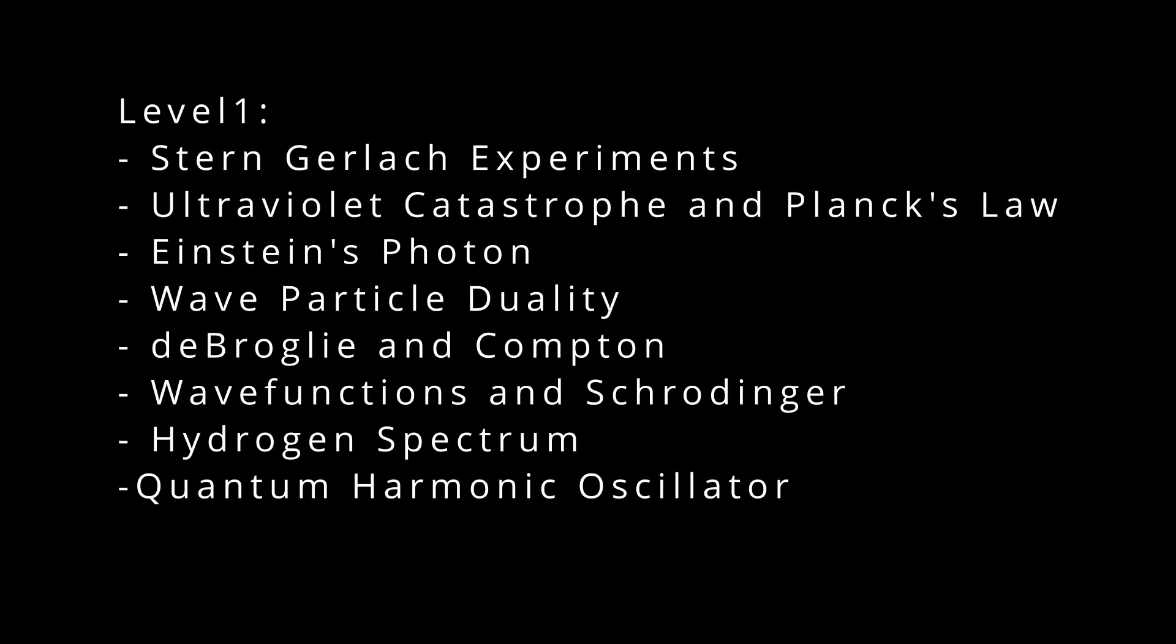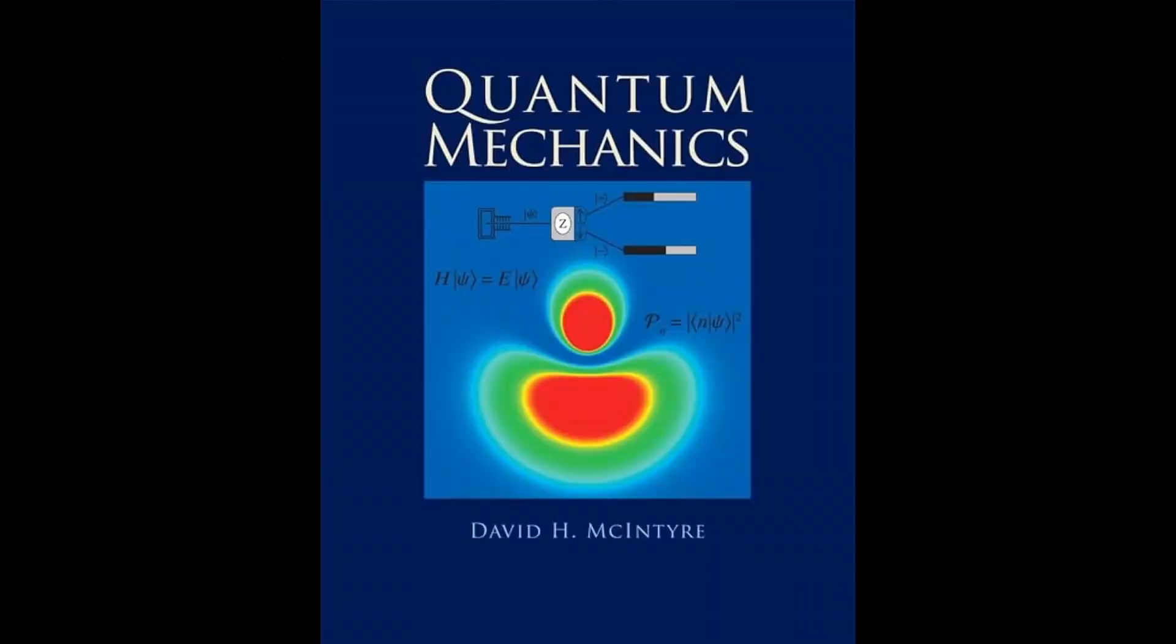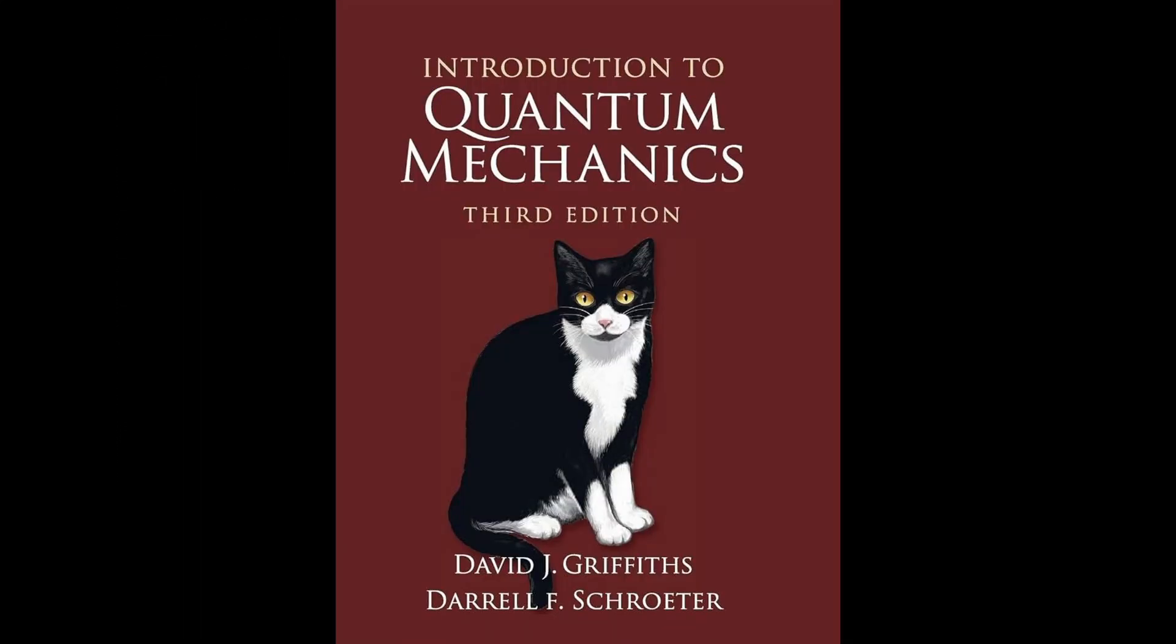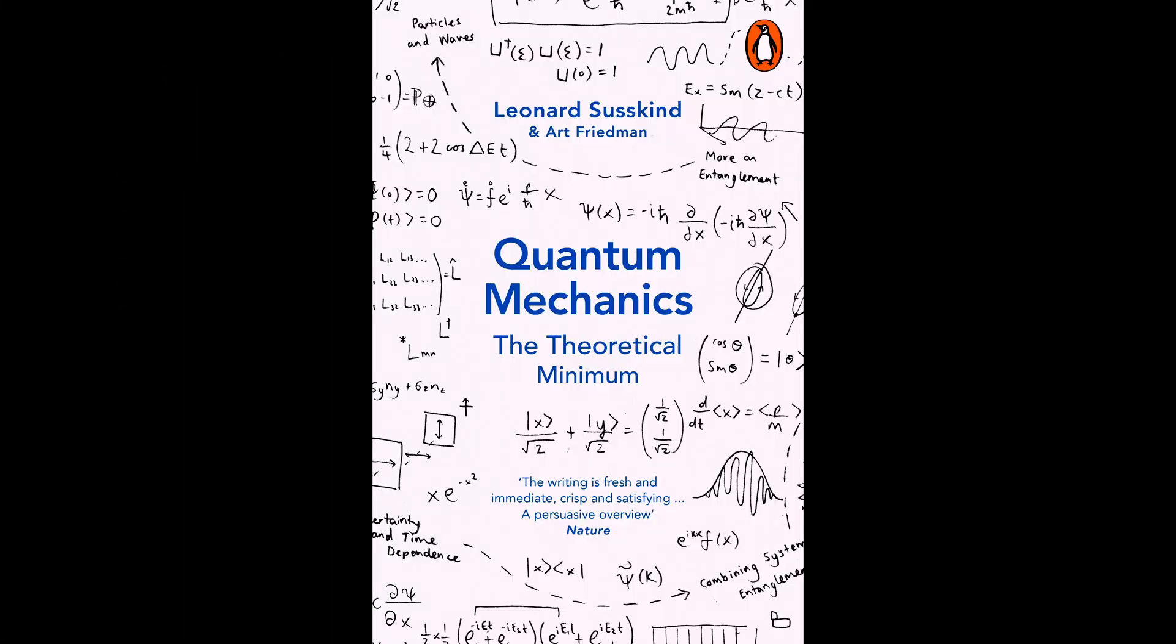This would be the level one quantum mechanics course, and what are some of the books you can use? You can use McIntyre, you can use Griffith's book, and you can also use the theoretical minimum by Leonard Susskind. So this is level one.